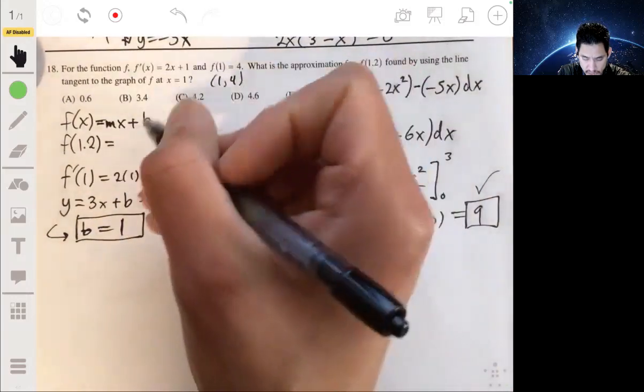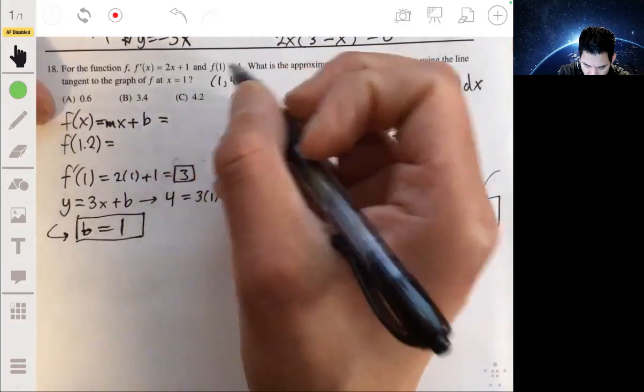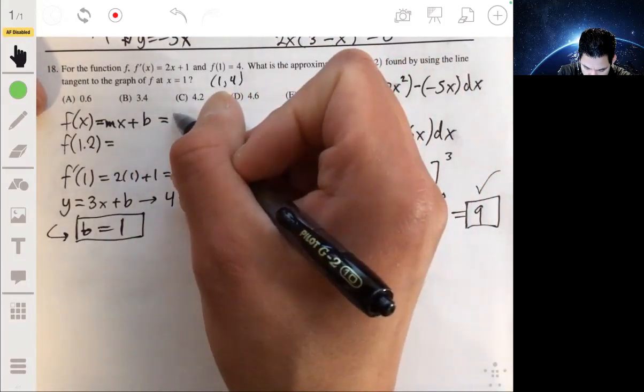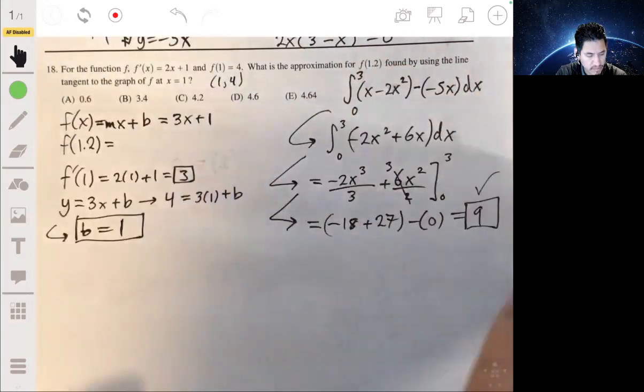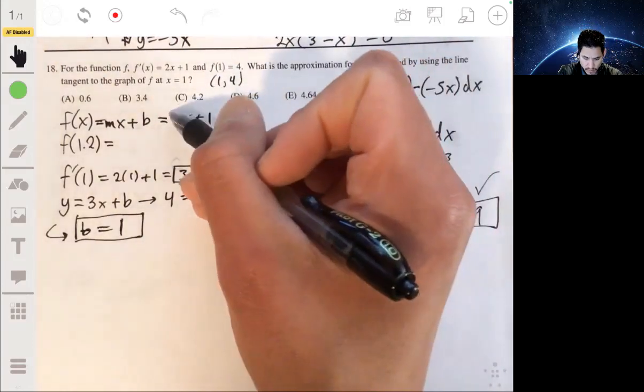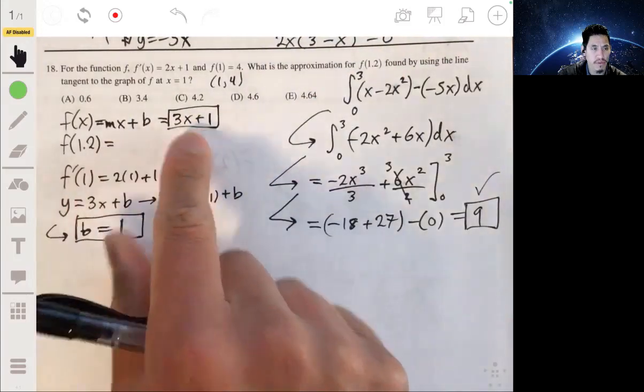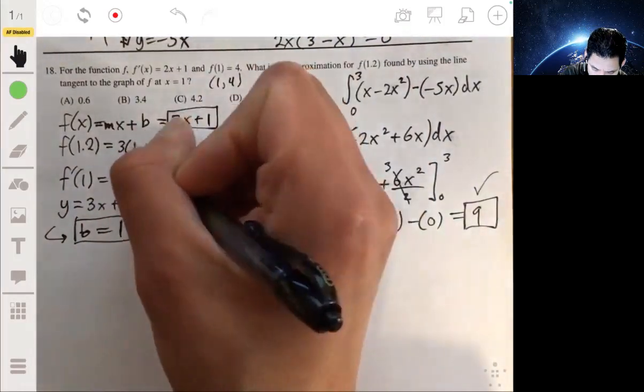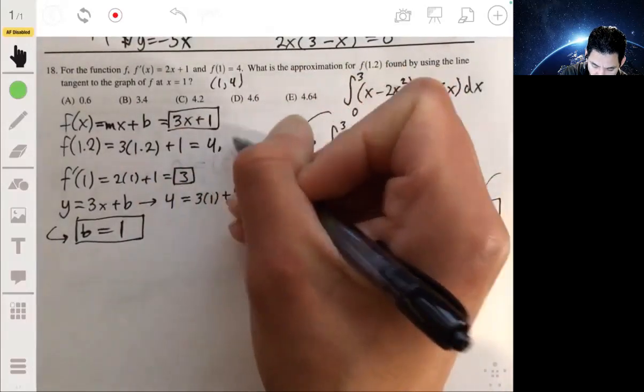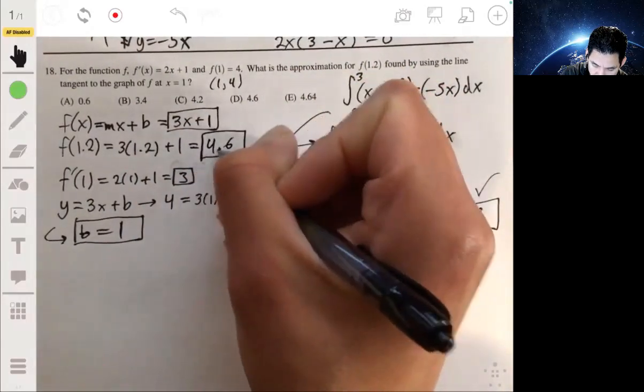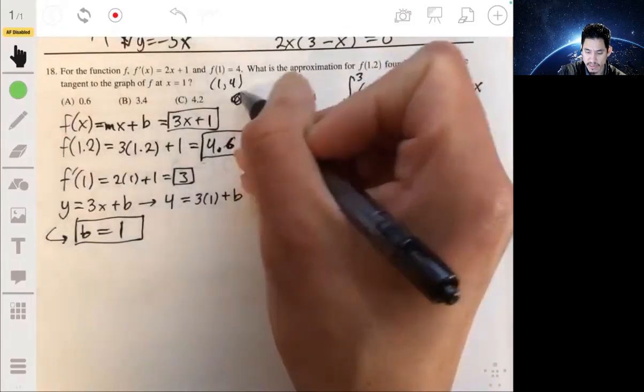And then we just now rewrite our equation for f of x as 3x plus 1. And then we can find f of 1.2 by plugging 1.2 into here, 3.6 plus 1, and we get 4.6. So the answer is D.